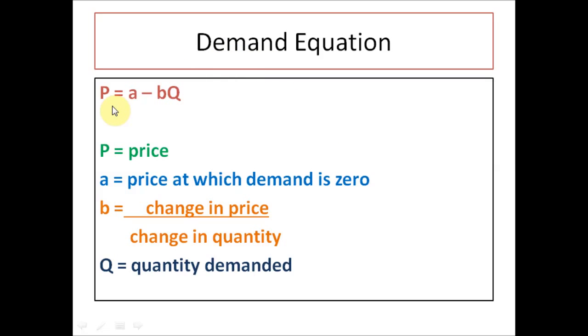So what is the demand equation? Demand equation is when P equals a minus bQ. P is the price, where a is the price at which demand is zero. B is calculated by taking change in price and dividing by the change in quantity. And Q is the quantity demanded.